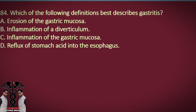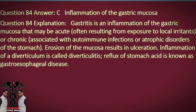Question 84. Which of the following definitions best describes gastritis? A. Erosion of the gastric mucosa. B. Inflammation of a diverticulum. C. Inflammation of the gastric mucosa. D. Reflux of stomach acid into the esophagus. Answer: C. Inflammation of the gastric mucosa. Explanation: Gastritis is an inflammation of the gastric mucosa that may be acute, often resulting from exposure to local irritants, or chronic, associated with autoimmune infections or atrophic disorders of the stomach. Erosion of the mucosa results in ulceration. Inflammation of a diverticulum is called diverticulitis. Reflux of stomach acid is known as gastroesophageal disease.